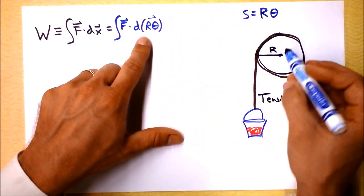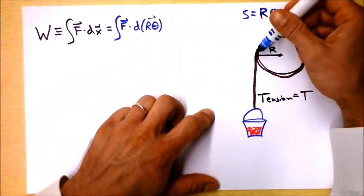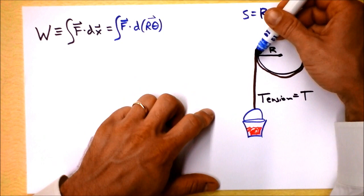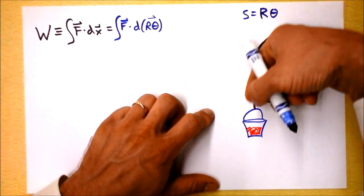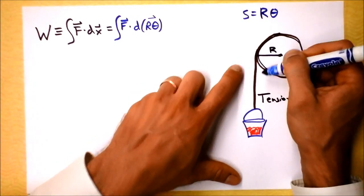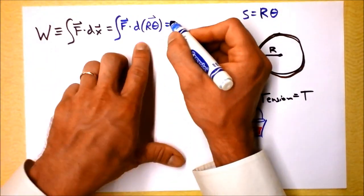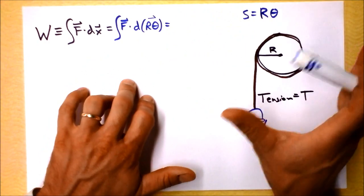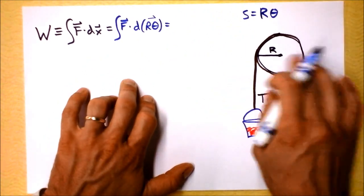In the situation where R is not changing, I can pull that sucker out. And oh gosh, what are we gonna do about this dot product thing? Good news: the force is always this way and it's always the direction of s, also the direction of the arc length.